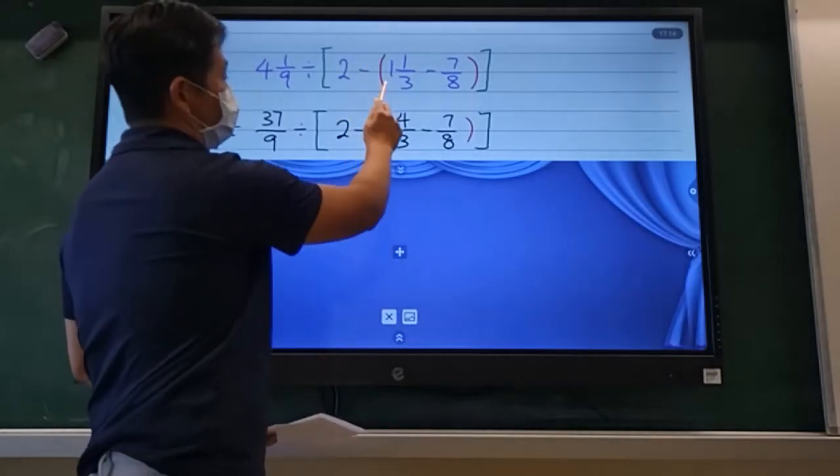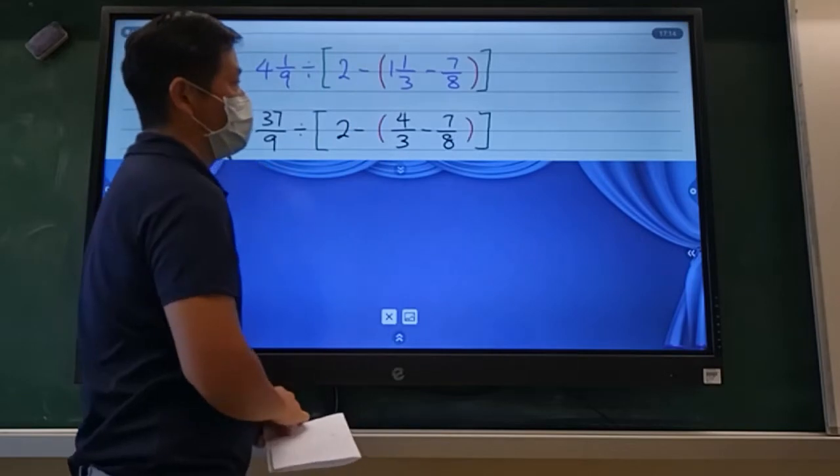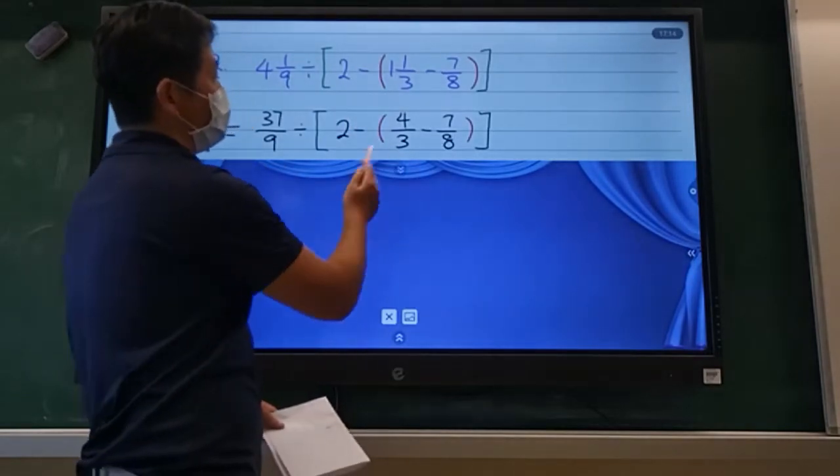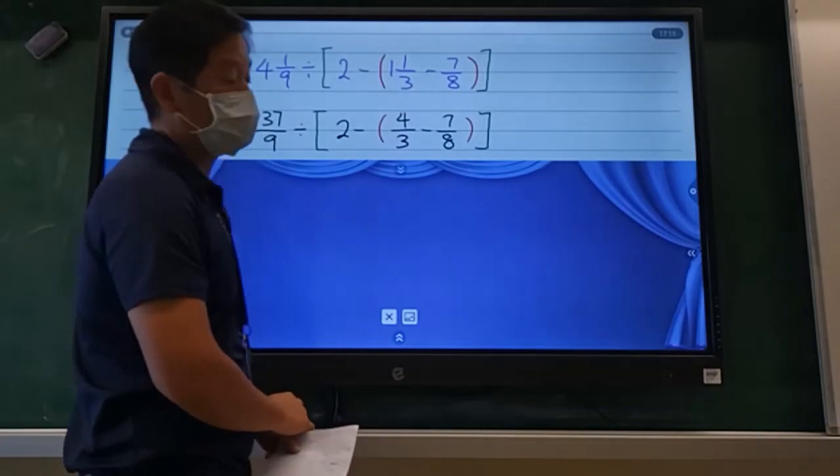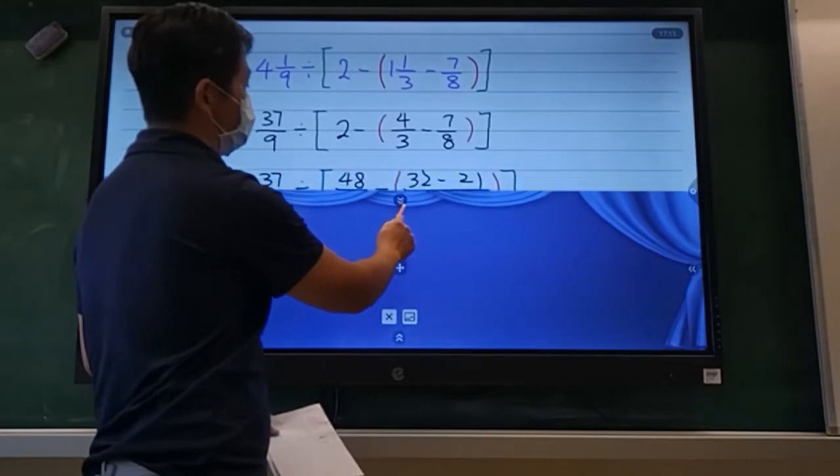From those two numbers, 1 and 1/3 minus 7/8, we need to first change everything into improper fraction if there's a mixed number. And then we got to find the lowest common denominator again. So 3 and 8, I think you should be able to find that it's 24.